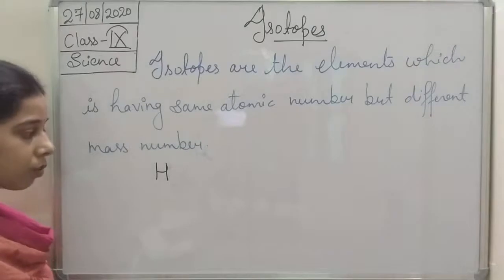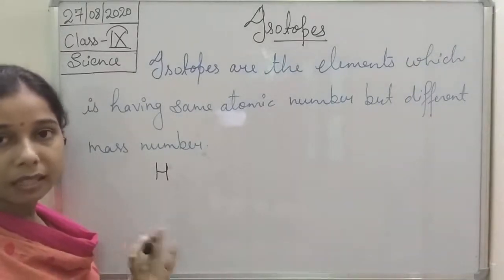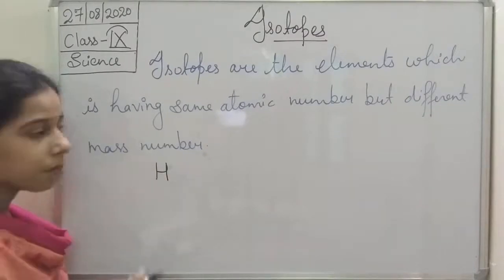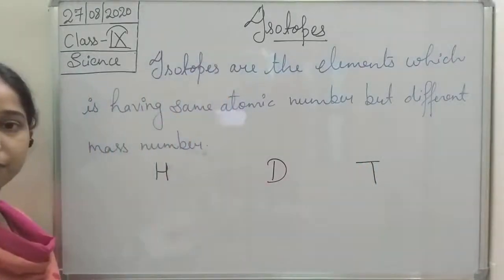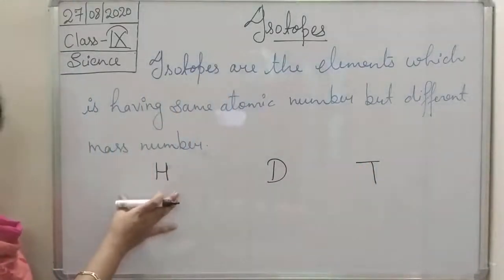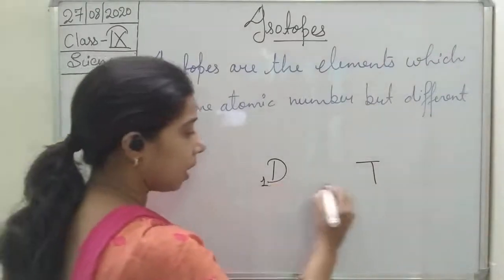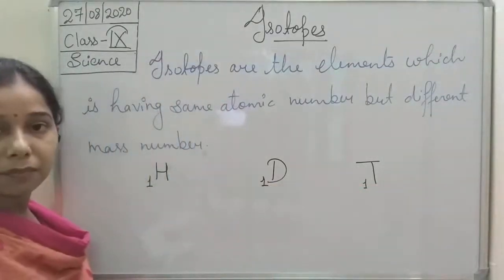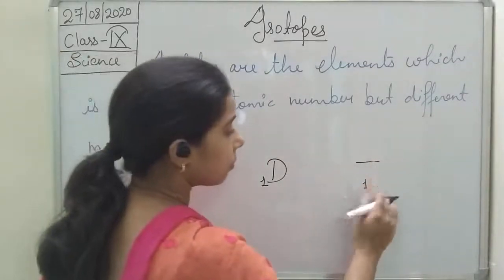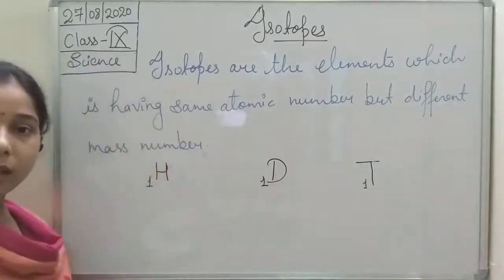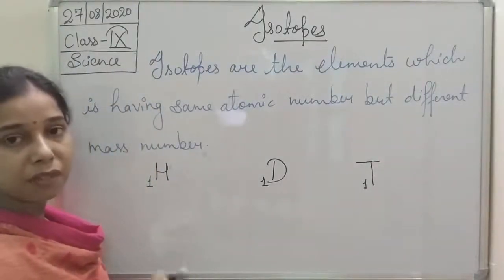If you see hydrogen, basically hydrogen exists in three forms. Hydrogen, deuterium, and tritium. If you see the atomic number, all three are having the same atomic number, and that is one. It varies only with the mass number.